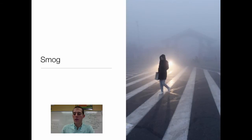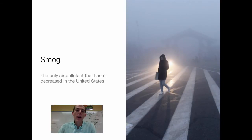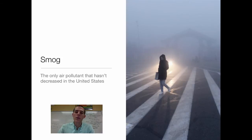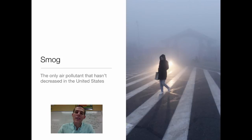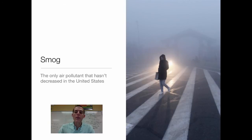Now let's jump into our main topic for the day: smog and acid deposition. First of all, let's remind you what smog is. Smog is air pollution that is the result of some chemistry that happens in the atmosphere. It usually presents itself as either a brown or gray haze in the air, kind of like you see in the picture there. Across the board, since the 1970s, since the Clean Air Act was implemented, all types of air pollution in America have decreased except for smog — it has not decreased over time.